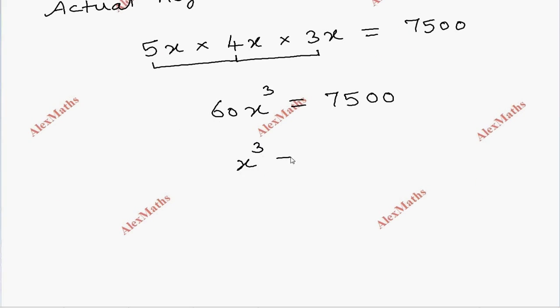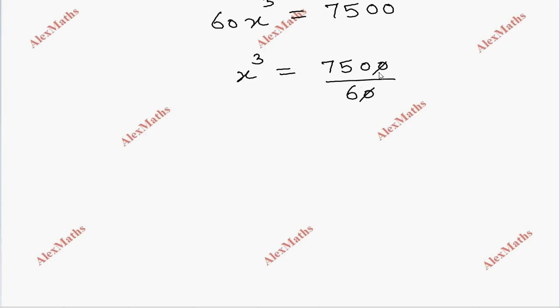So x³ equals 7500 divided by 60. Canceling zeros, 750 divided by 6: 1 times 6 balance 15, 2 times 12 balance 30.